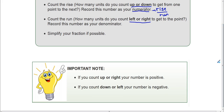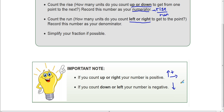One important thing to keep in mind: whenever you're counting up or to the right, that number is always going to be positive, because those are our two positive directions. Whenever you count down or to the left, that number is always going to be negative, because those are our negative directions.